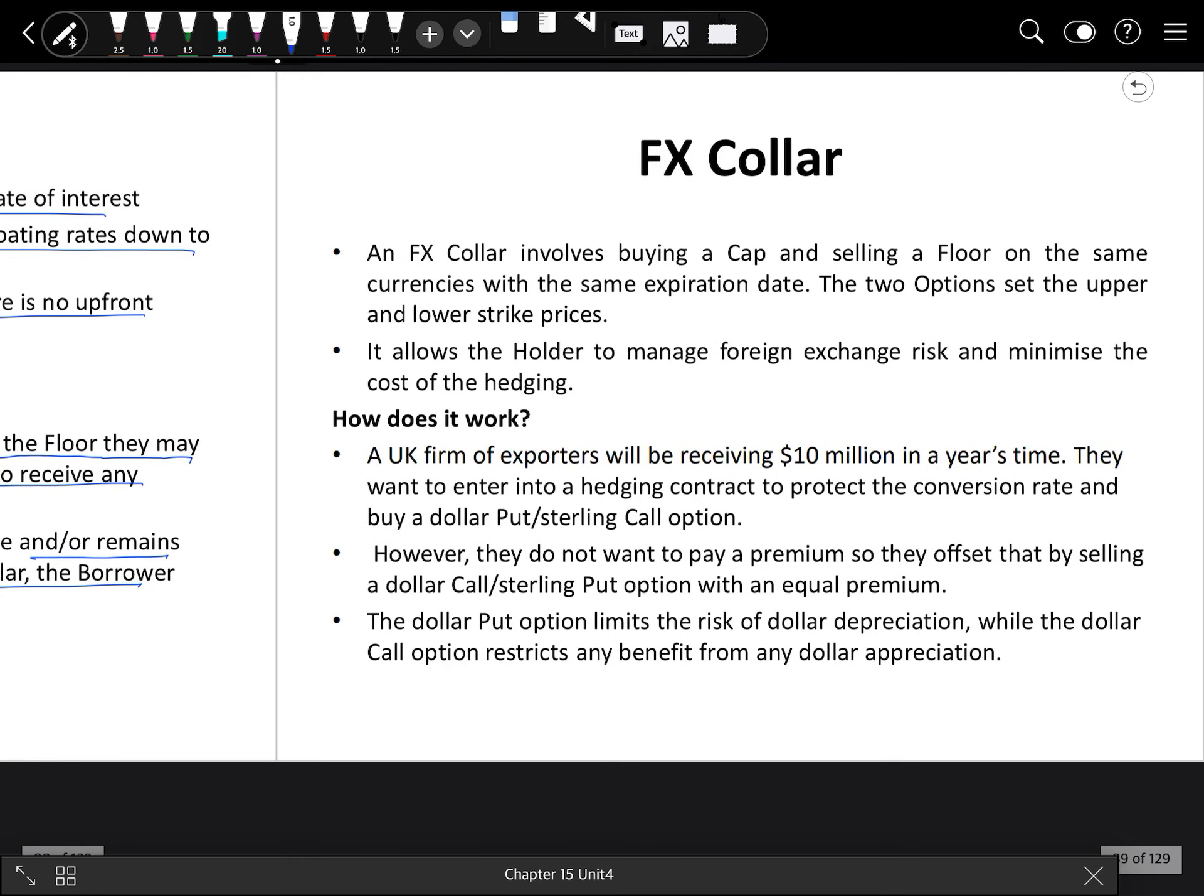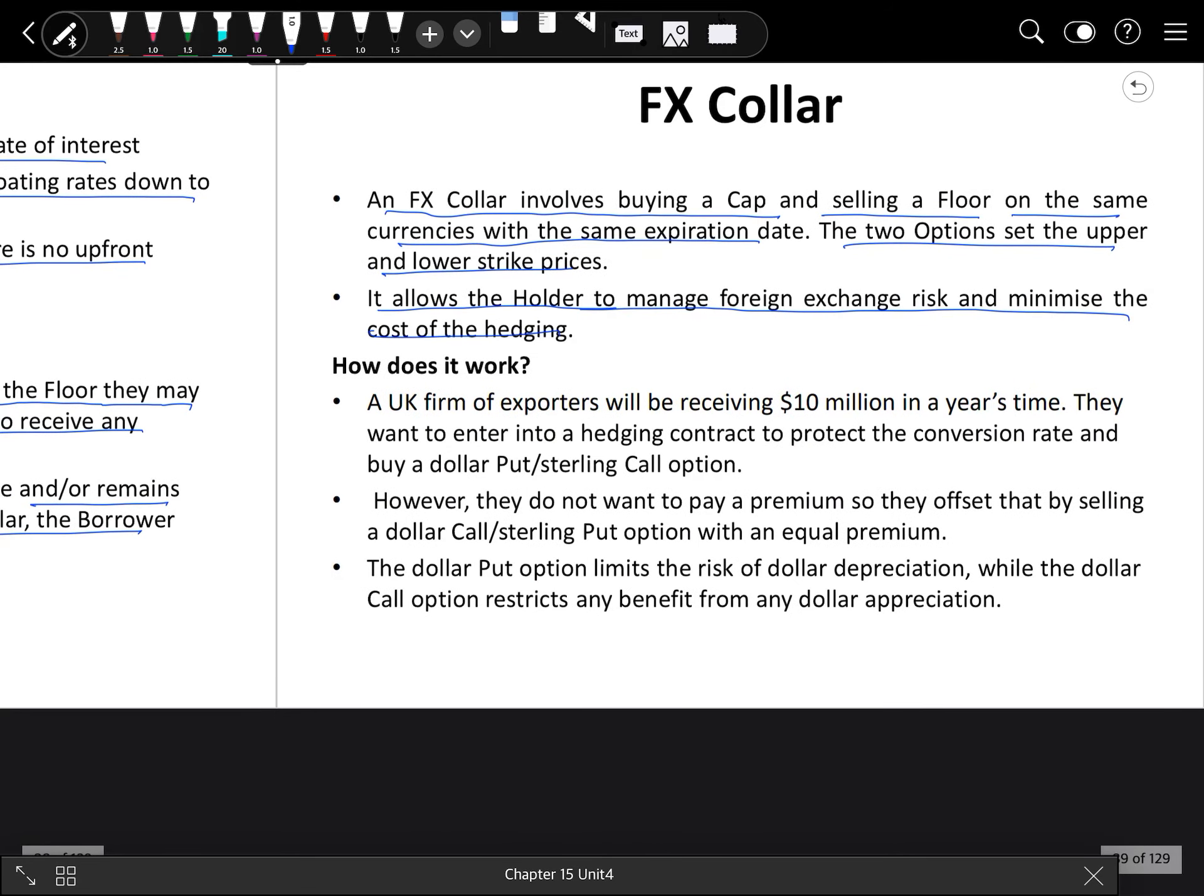Next type is FX collar. FX collar involves buying a cap and selling a floor on the same currencies with the same expiration date. The two options set the upper and lower strike prices. This is a special type where the expiration date is the same and we are deciding for the same currencies a floor rate and a cap rate. It allows the holder to manage foreign exchange risk and minimize the cost of hedging. For example, a UK firm of exporters will be receiving $10 million in a year's time, so they want to enter into a hedging contract to protect the conversion rate by buying a dollar put or sterling call option.